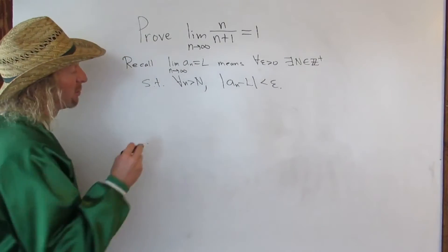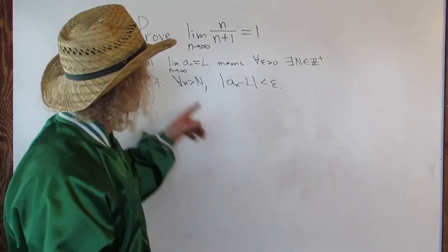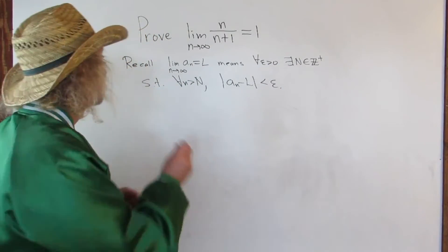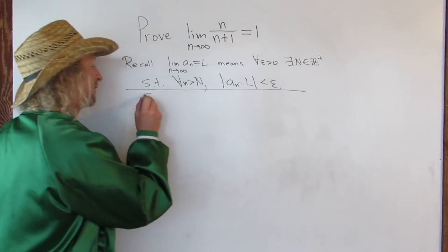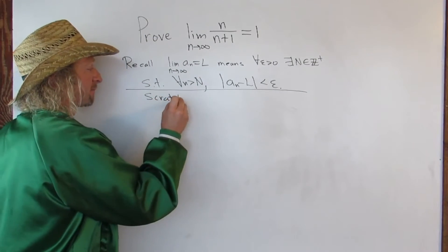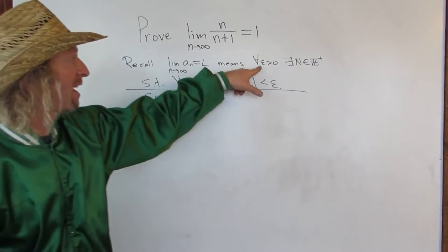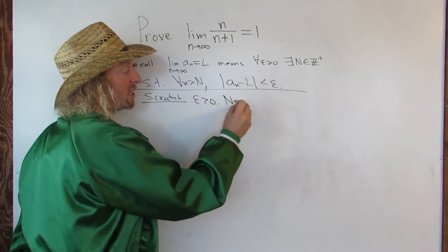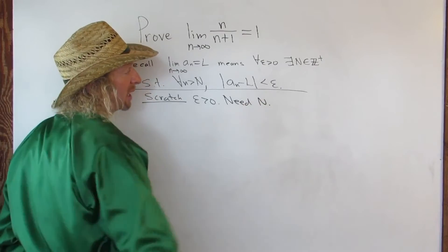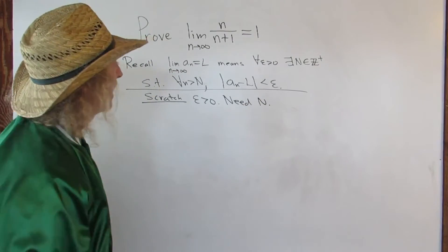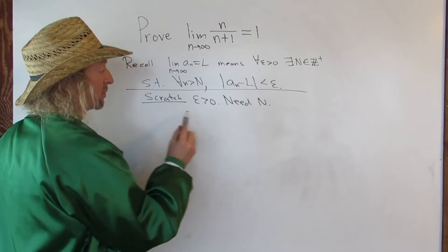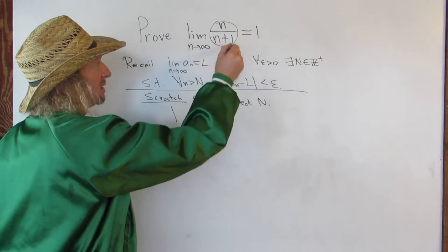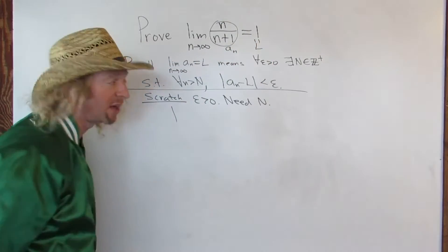Before we prove this we have to figure out the proof. So in our proof we'll start with our epsilon, and we'll have to find N. Let's do our scratch work and see if we can find N. So scratch: we'll start our proof by having our epsilon — we get that for free — and then we need to find big N.